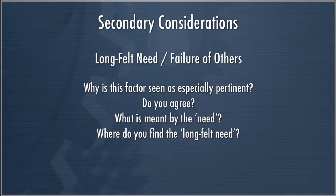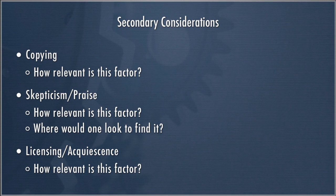Long-felt need is probably the most relevant secondary consideration. Copying — where lots of the industry has copied your innovation — is rarely a particularly powerful argument, in part because there are lots of reasons people might copy your innovation that don't have a lot to do with the technical merit of your invention. It might be that they think your patent is invalid, so it's easier to copy than to make their own. It might be that you've done something cheaper, and unless your claims are directed to that cheaper aspect, it's unlikely to reflect the technical merit of your innovation.